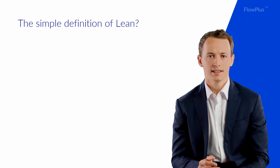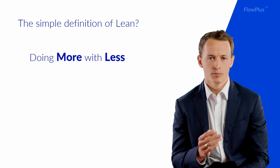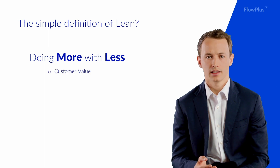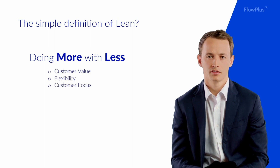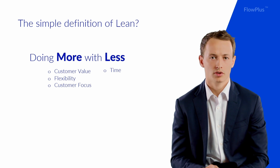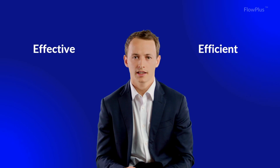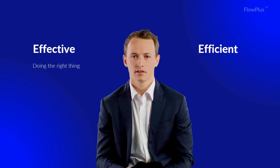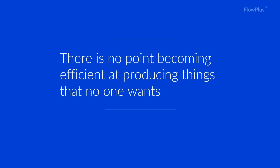Lean is about doing more with less: more customer value, flexibility, and customer focus, with less time, resource, and energy. Effective means doing the right things, while efficient means doing things right — so lean is about being both effective and efficient.